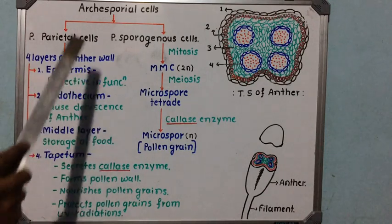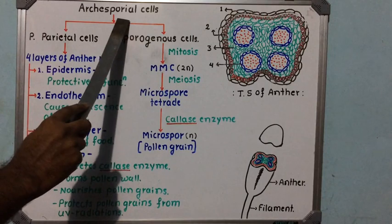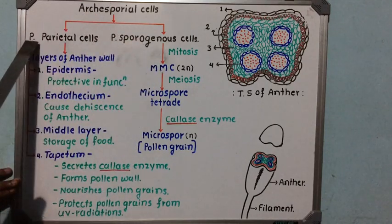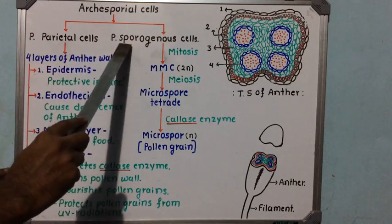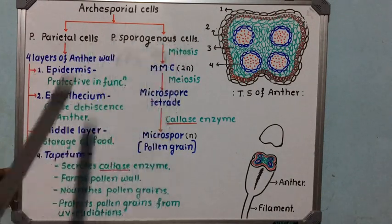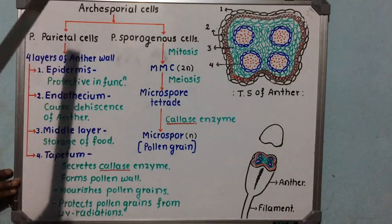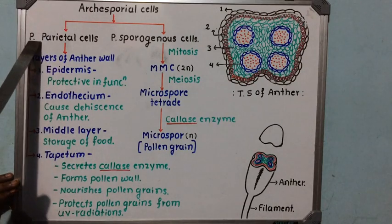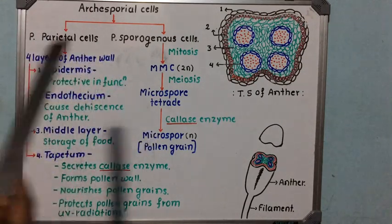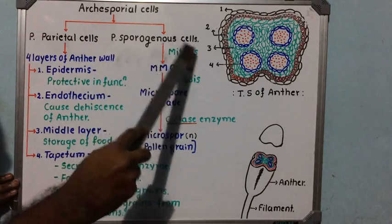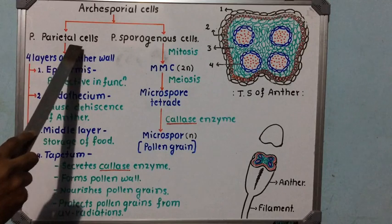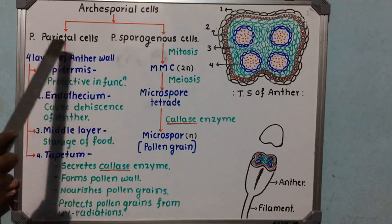Archesporial cells undergo differentiation and form two specialized cell types: primary parietal cells and primary sporogenous cells. These cells differentiate and produce new tissues. Let us study what the primary parietal cells and primary sporogenous cells are going to do and what they produce.